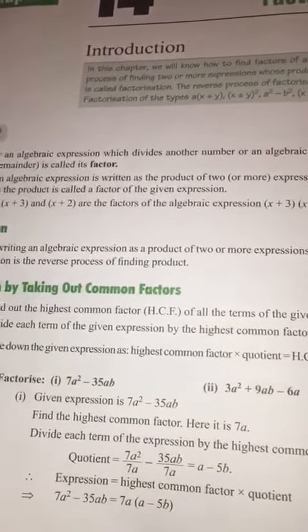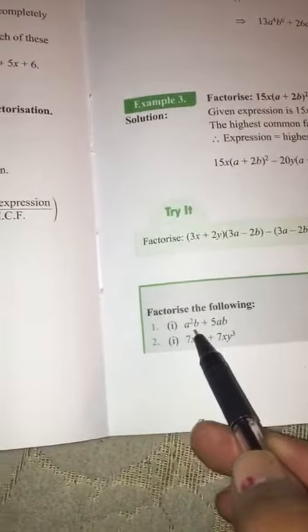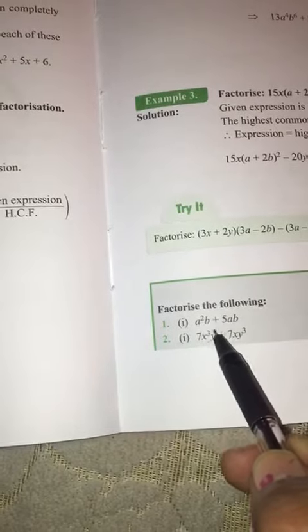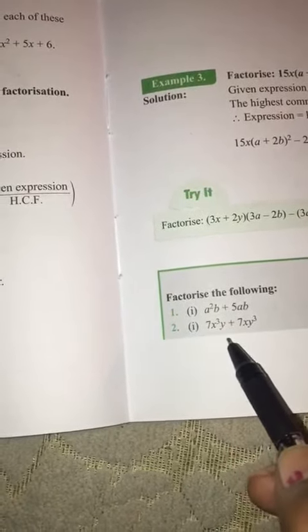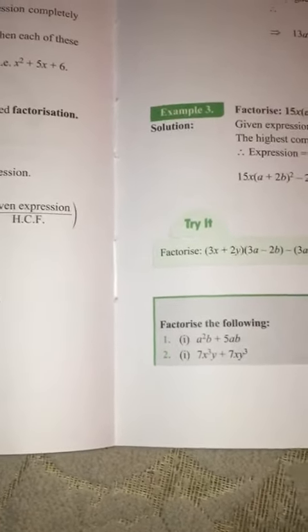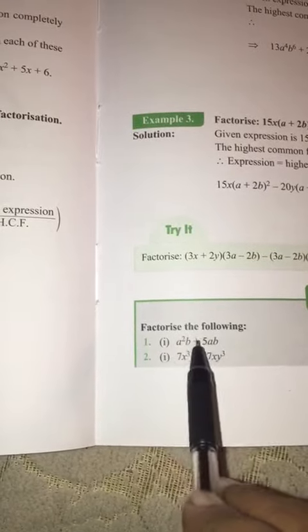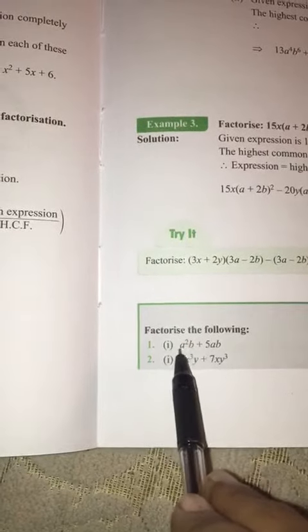We have to find out the highest common factor of all terms of the given expression. For example, in any term given, the numeric part is called the numeral coefficient and the rest is called the literal coefficient. First, we have to see if any numeral coefficient is common, which divides all terms.